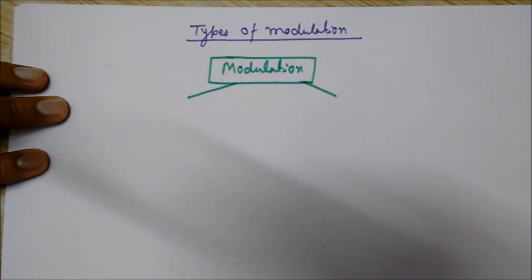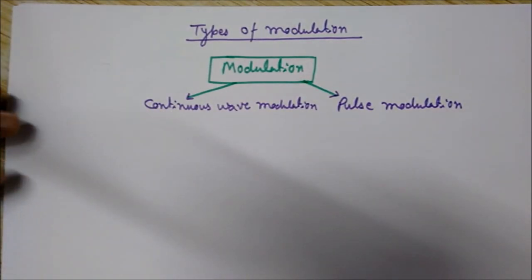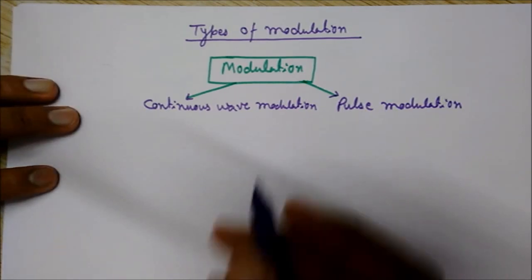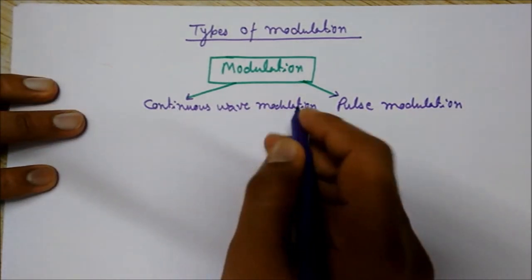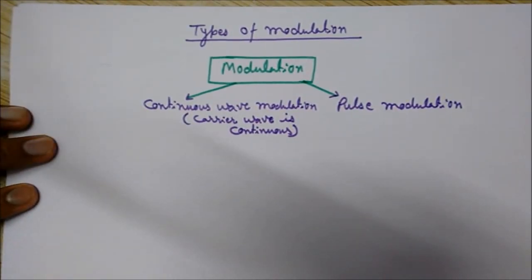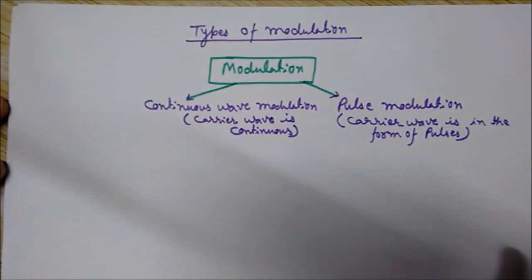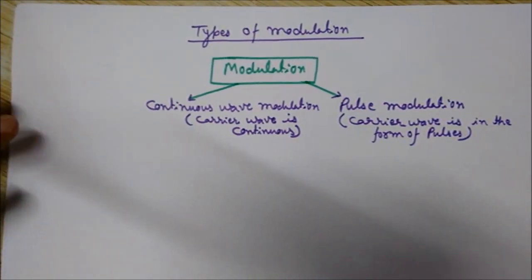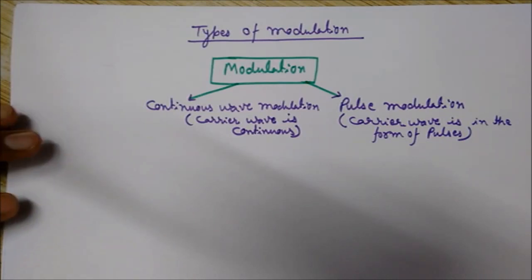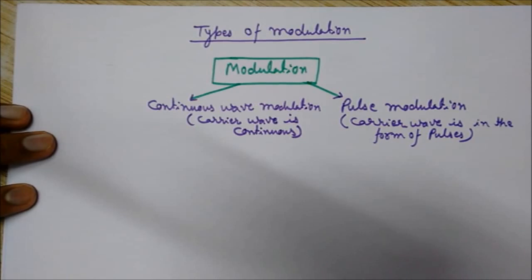In continuous wave modulation, the carrier wave is continuous. In pulse modulation, the carrier wave is in the form of pulses. This continuous wave modulation can again be classified into amplitude modulation and angle modulation.